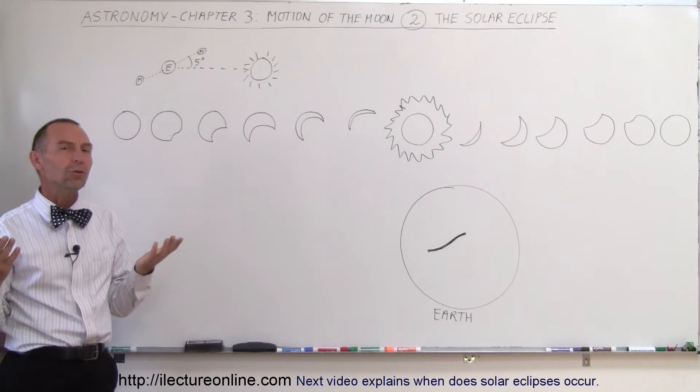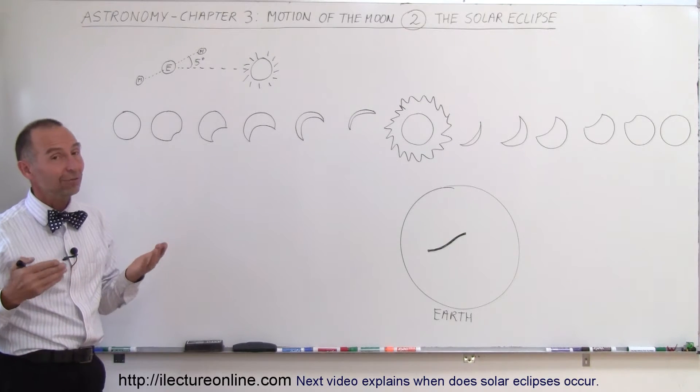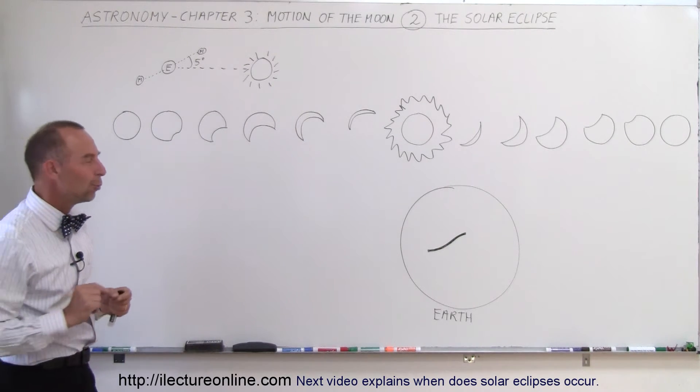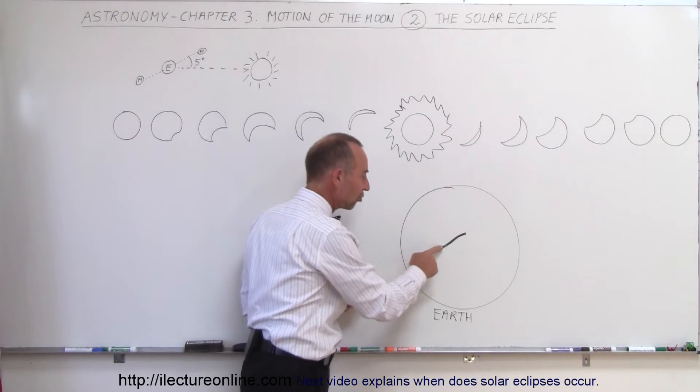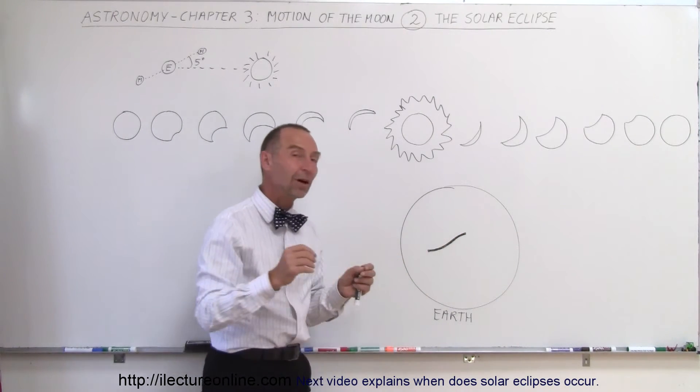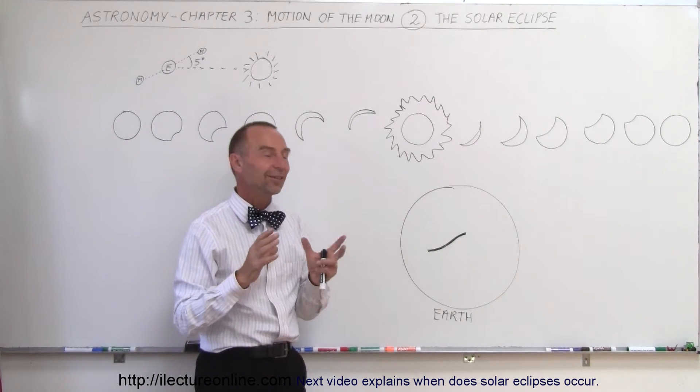But let's assume for a moment that we're experiencing a total solar eclipse. Unfortunately for the people on the Earth, it only happens in a very small region on the Earth. Usually the Moon shadow will just make a strip on the Earth. That's because the size of the Moon and the size of the Earth are approximately the same size.